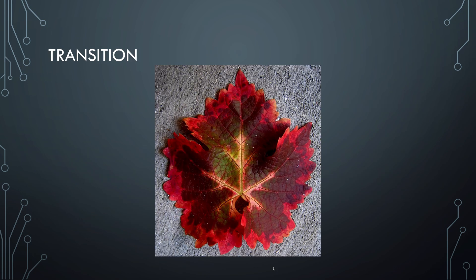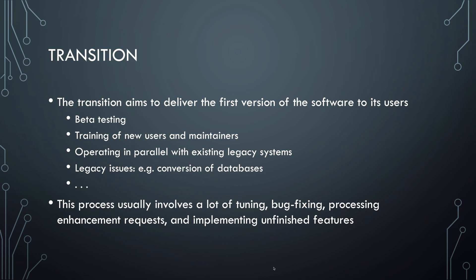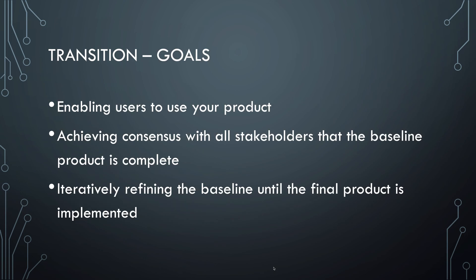The final phase of UP is transition. The first version of the software is ready and we want to put it into the user's hands. This is the phase where you run beta tests, train users, and make sure there's a plan to transition from the legacy system to your new system. There may be work to do like converting old data to new formats or redirecting users from old URLs to new ones. You normally spend quite some time fixing bugs, making minor improvements based on user feedback, and finishing the remaining features. The goal is to make sure users can use the system and everybody involved agrees that the product does what we want.